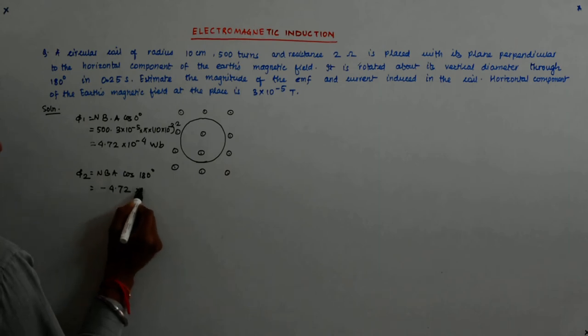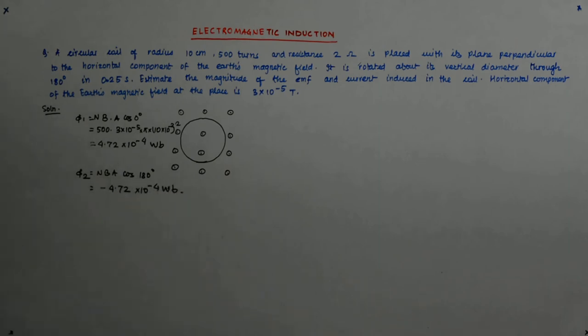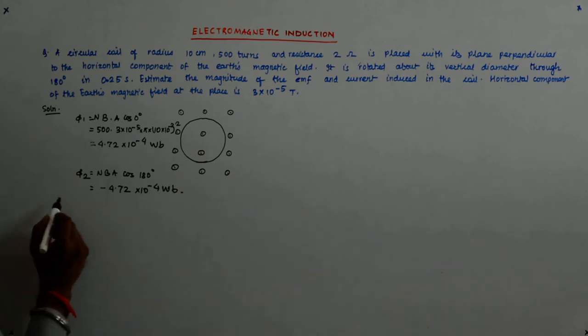And this makes it minus NBA and hence it becomes negative of that. So I do not have to do that calculation.